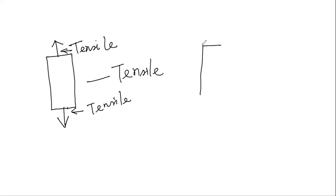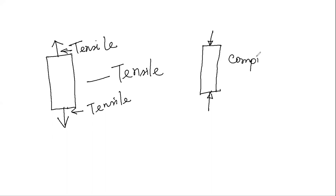If I have an object and I try to compress it, this will be called compressive load. Tensile load is trying to extend the length, and compressive load is trying to compress the length. We can easily understand the difference between the two.